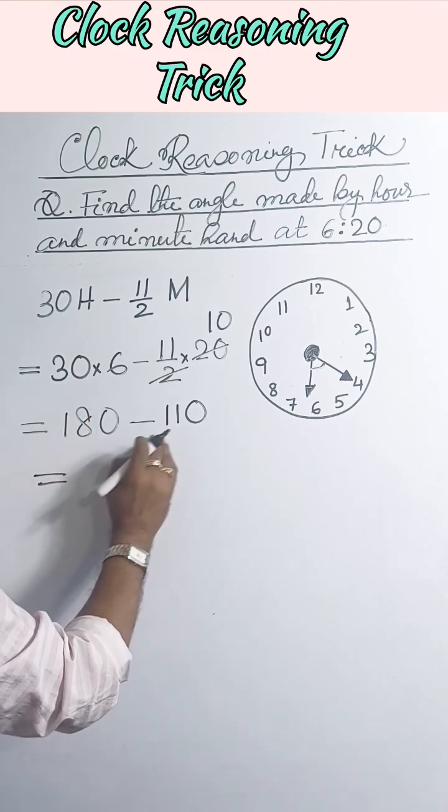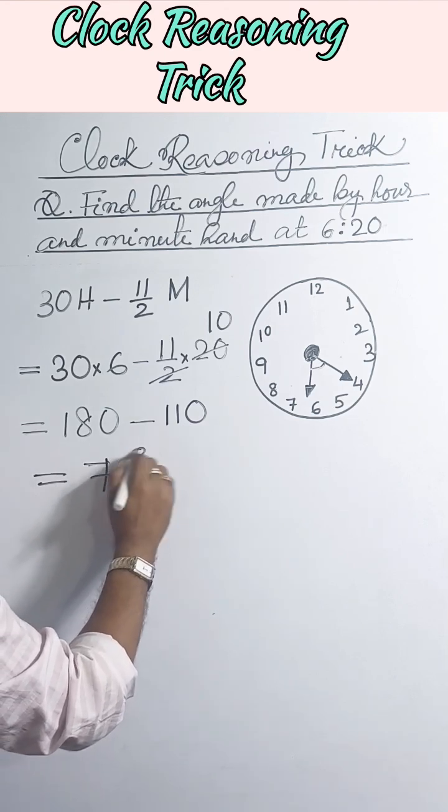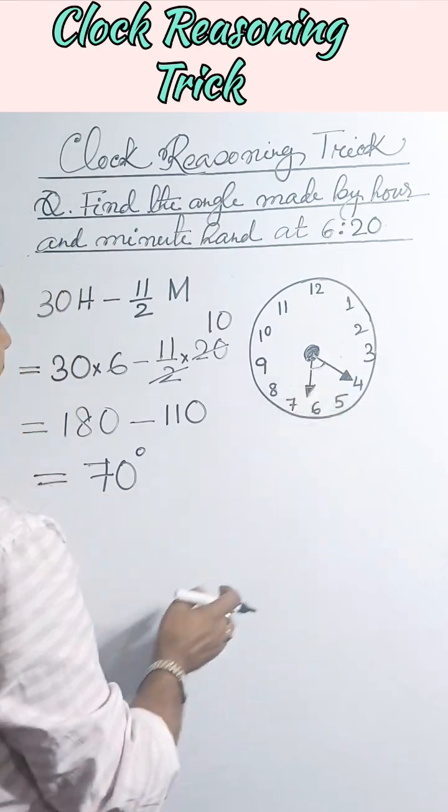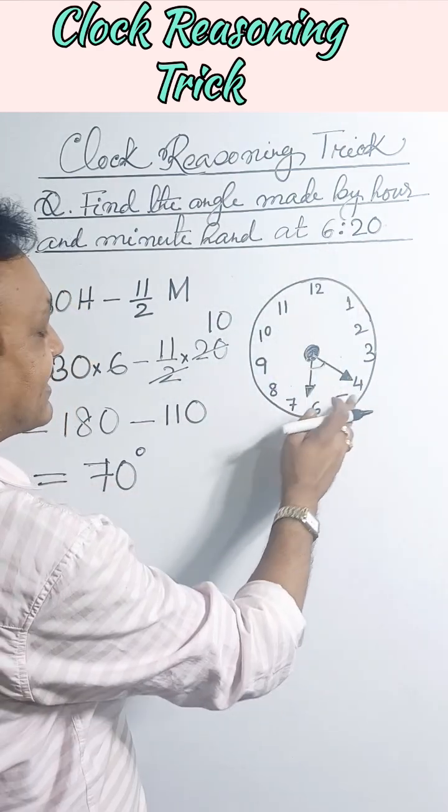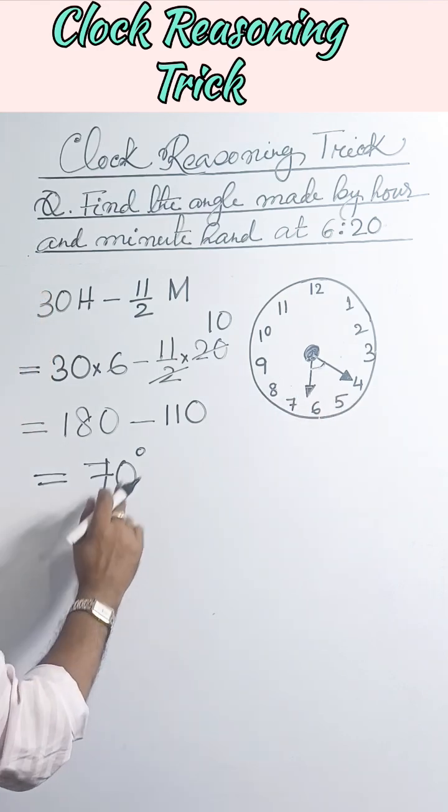180 minus 110, that will give you 70 degrees. So the angle between these two hands is 70 degrees at 6:20.